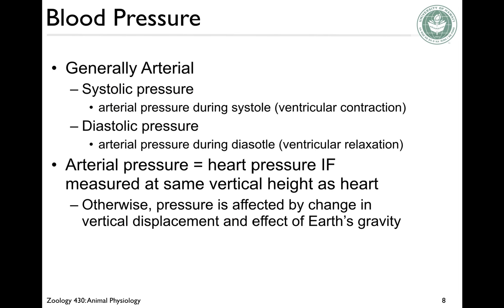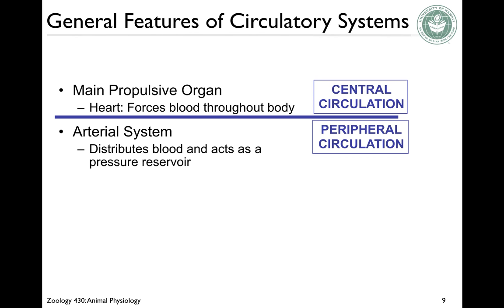Blood pressure is generally determined by arterial pressure. We have systolic pressure, which is the arterial pressure during systole or ventricular contraction, and diastolic pressure, which is arterial pressure during diastole or ventricular relaxation. The arterial pressure is the same as the heart pressure if measured at the same vertical height as the heart; otherwise, it's going to be affected by gravity.